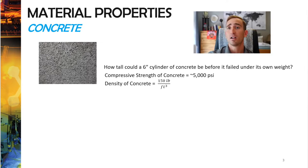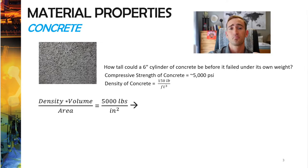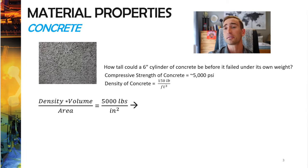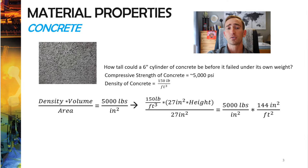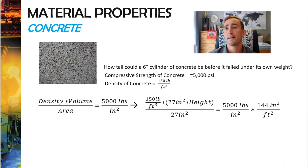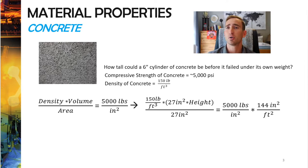The way you work this problem out is as follows. You'll take the density of concrete, multiply it by the volume of concrete, and then divide it by the area — and this will end up equaling the compressive strength of concrete. So we take our density of 150 pounds per cubic foot, multiply that by 27 inches squared, which is our cross-sectional area, multiplied by the height, because the area of a circle times its height is the volume of a cylinder.